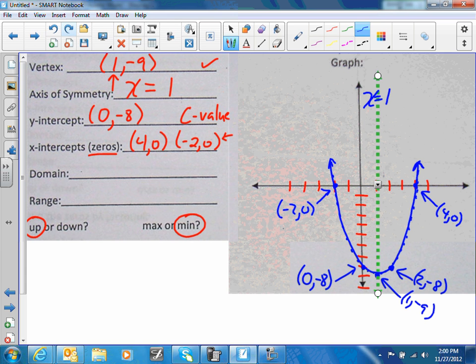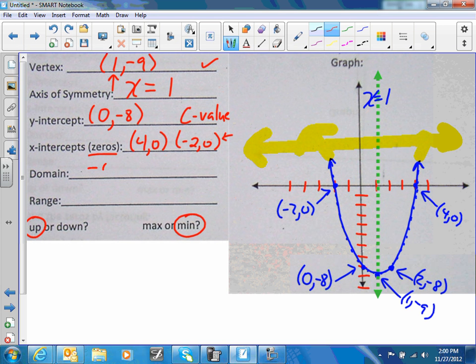That's basically what you're going to do. Your domain: remember, this graph is going this way and this way, which means it's going to go forever in both directions. So your domain is negative infinity to positive infinity.